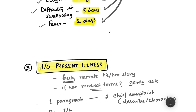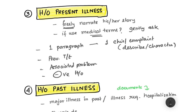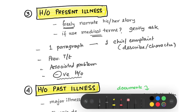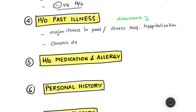You can also add certain negative histories — for example, even though a patient has difficulty in swallowing and cough, they don't have breathing difficulty — this helps eliminate other provisional diagnoses. Whenever you ask about previous treatment, always ask for documents. In countries like India where electronic medical records are not available, ask for previous hospitalization records and prescriptions. Always ask for documents.